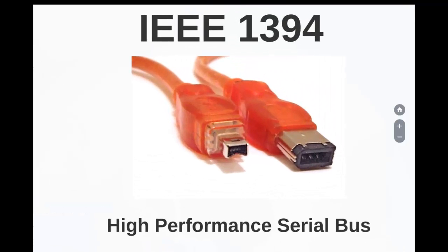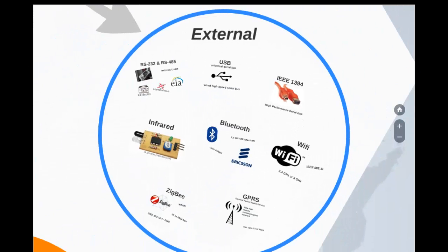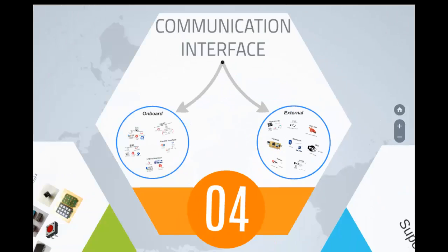IEEE 1394 is a wired, isochronous, high-speed serial communication bus also known as High Performance Serial Bus (HPSB). Research on 1394 was started by Apple Inc. in 1985, and the standard was defined by IEEE. It supports data rates of 400 to 3200 Mbps and supports peer-to-peer and point-to-multipoint communication, allowing up to 63 devices connected on the bus in a tree topology. It can support a cable length of up to 15 feet.